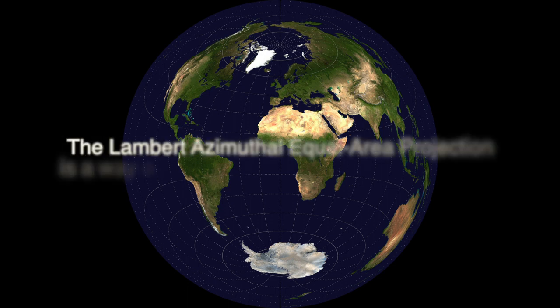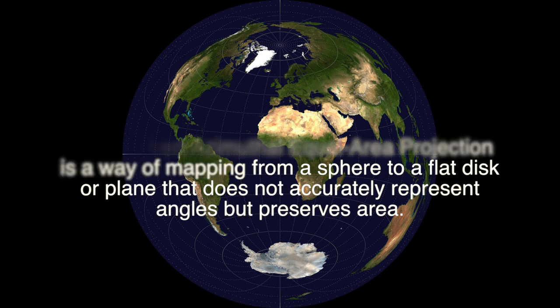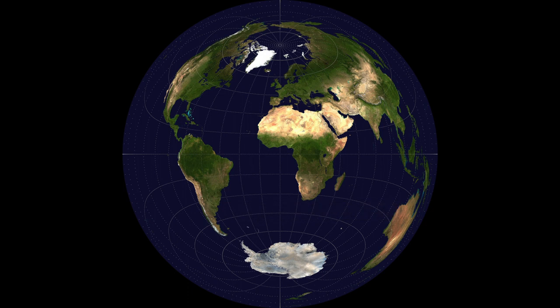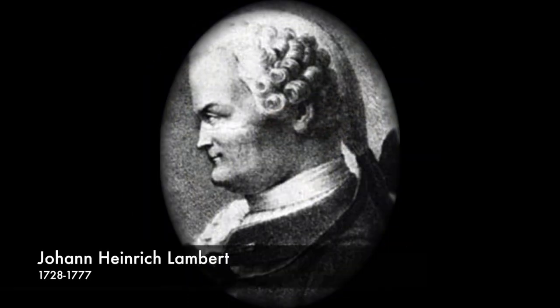The Lambert azimuthal equal area projection is a way of mapping from a sphere to a flat disk or plane that does not accurately represent angles but preserves area. It's named for the Swiss polymath Johann Heinrich Lambert, who invented it in 1772.